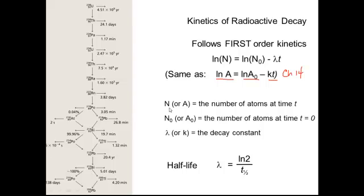So N, or A, is the number of atoms at time T, and you can have all kinds of crazy units here. It could be called disintegrations, or Curies, or just different units used in nuclear chemistry, but as long as both units are the same, it doesn't matter, so don't let that throw you. N₀, or A₀, is the number of atoms at time zero, which is just the initial reading, and then we have our constant.